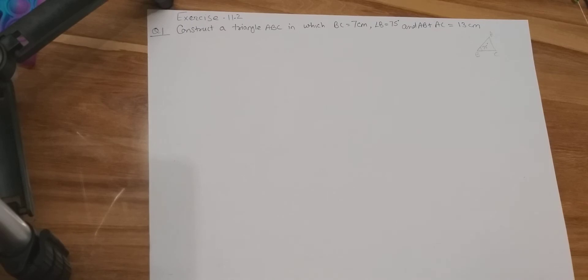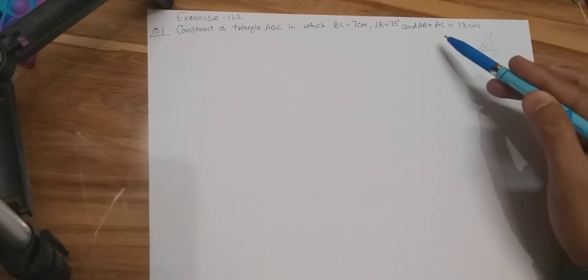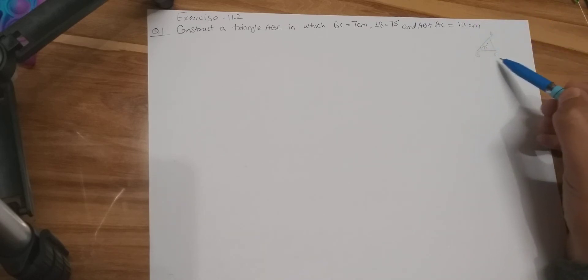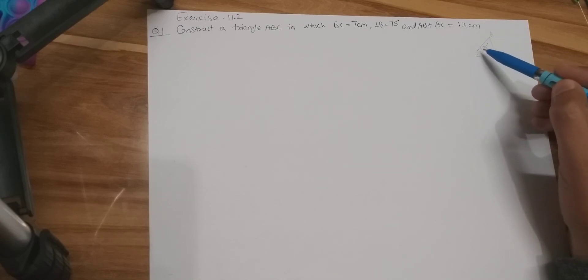Class 9 Exercise 11.2, first question: construct triangle ABC in which BC is 7 centimeters, angle B is 75 degrees, and the sum of the other two sides AB and AC is 13 centimeters. Here BC is the base, BA is one side, there is an angle of 75 degrees at B, and AC is the third side.